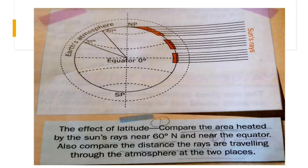Places near the poles get the slanting rays. Children, can you see this? This is slanting rays of the sun. These rays have to travel through a great distance and spread out over a large area and are therefore weaker, thus making places near the poles less hot.